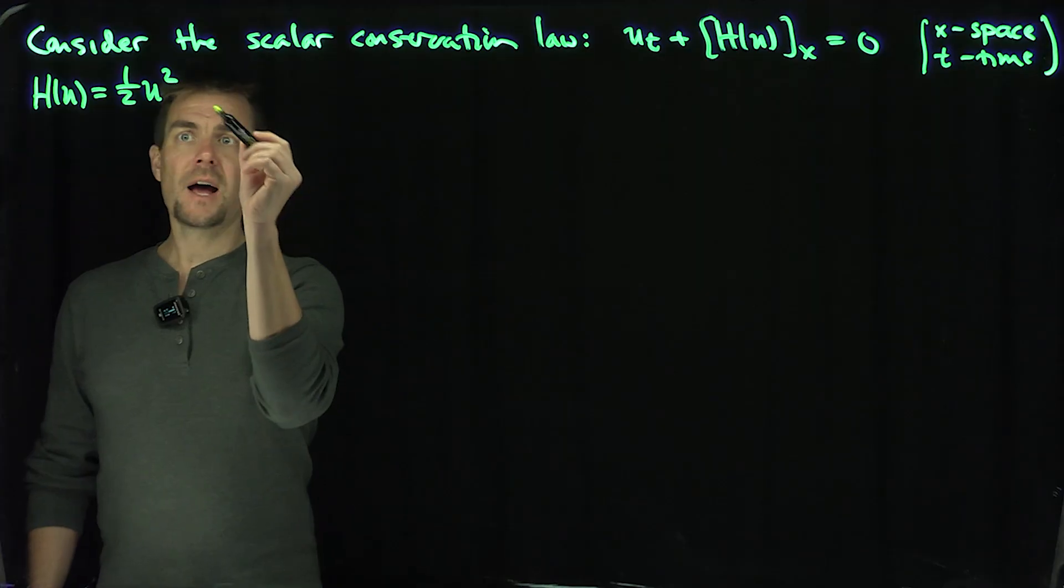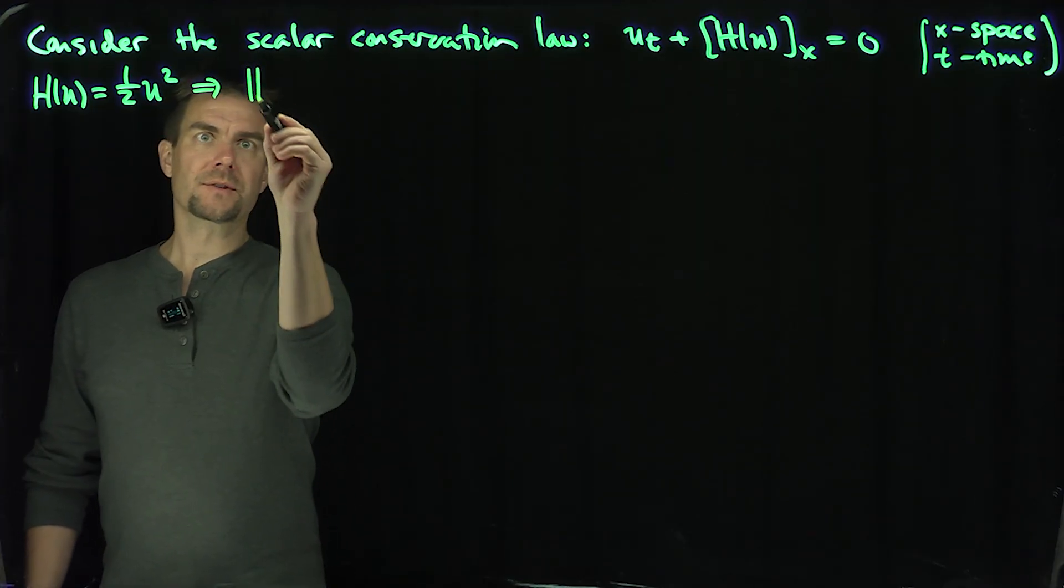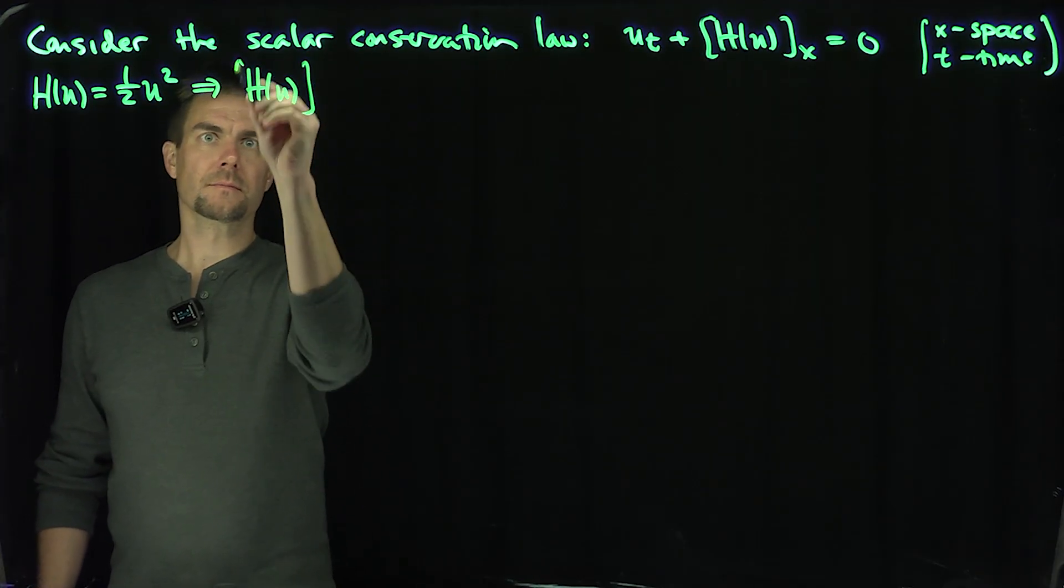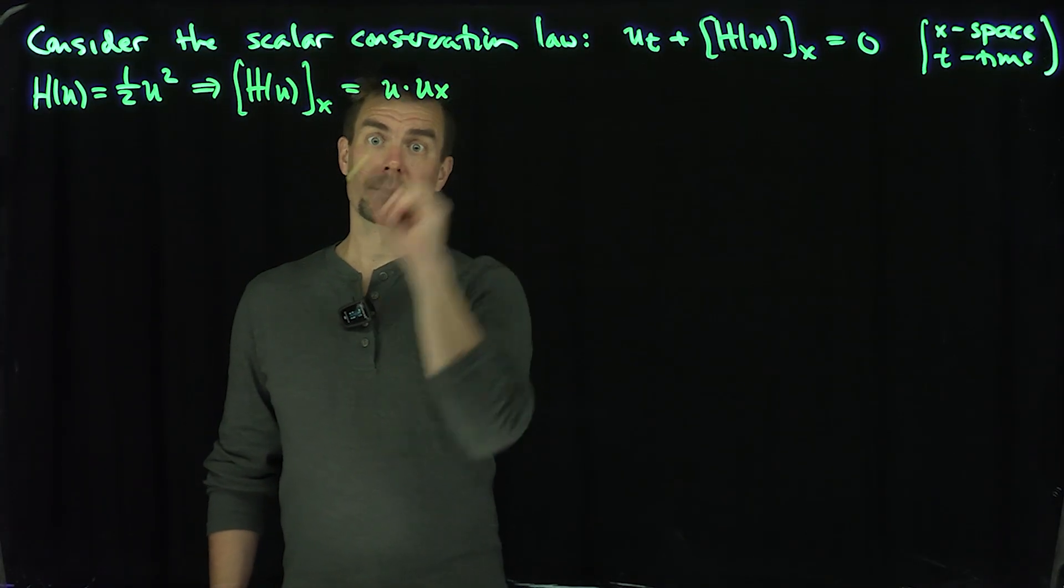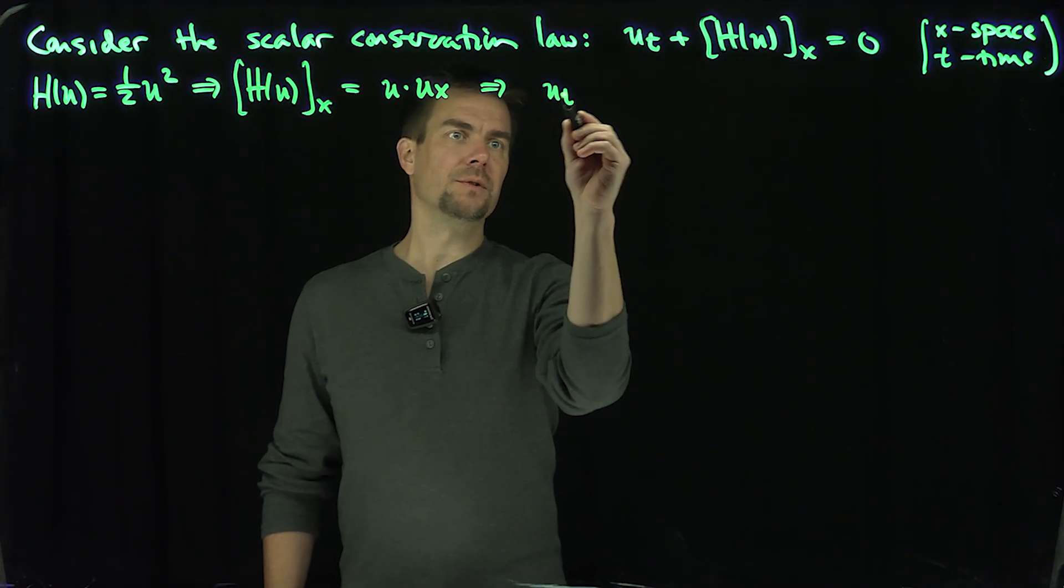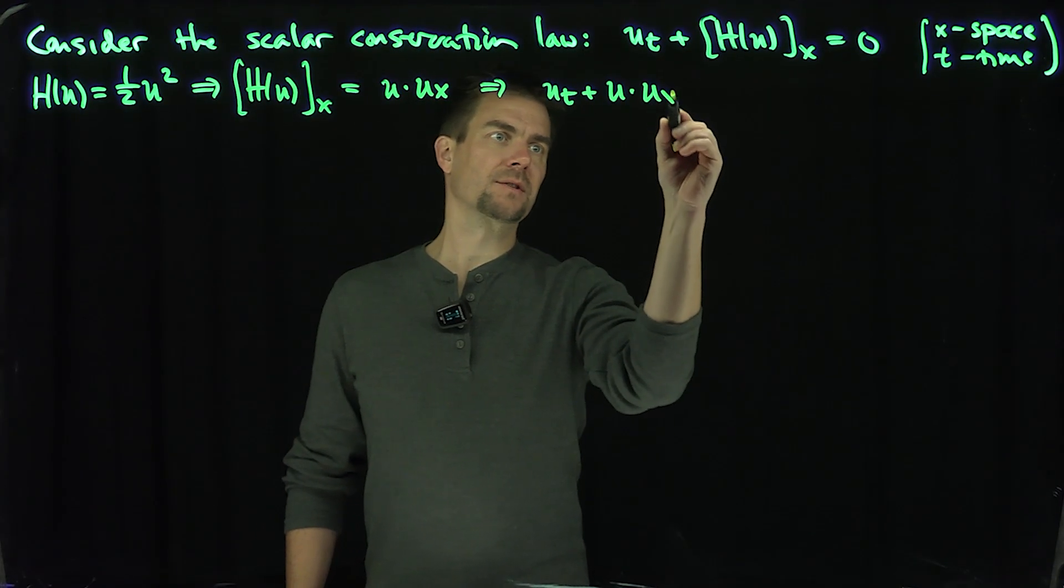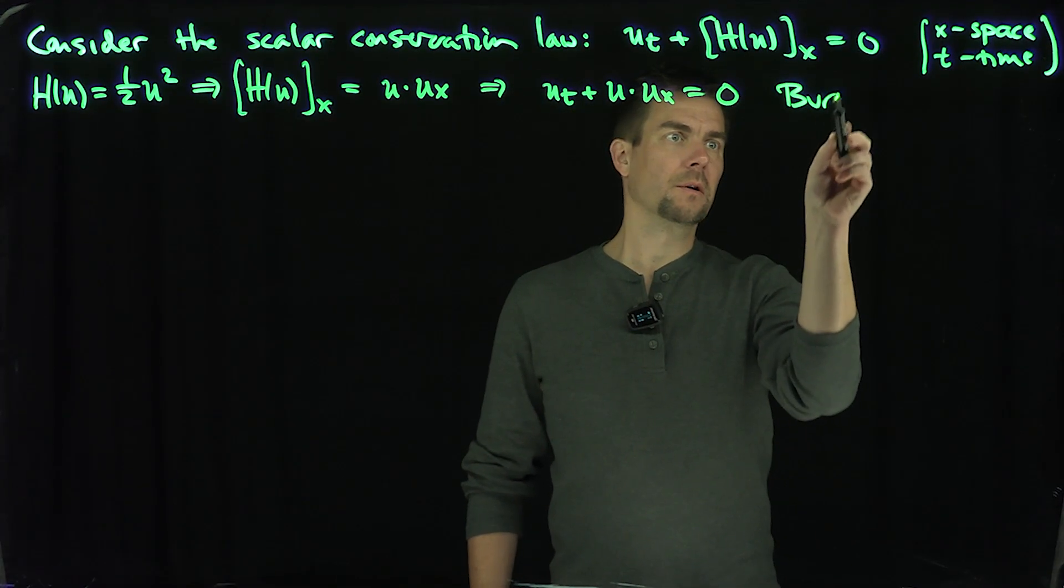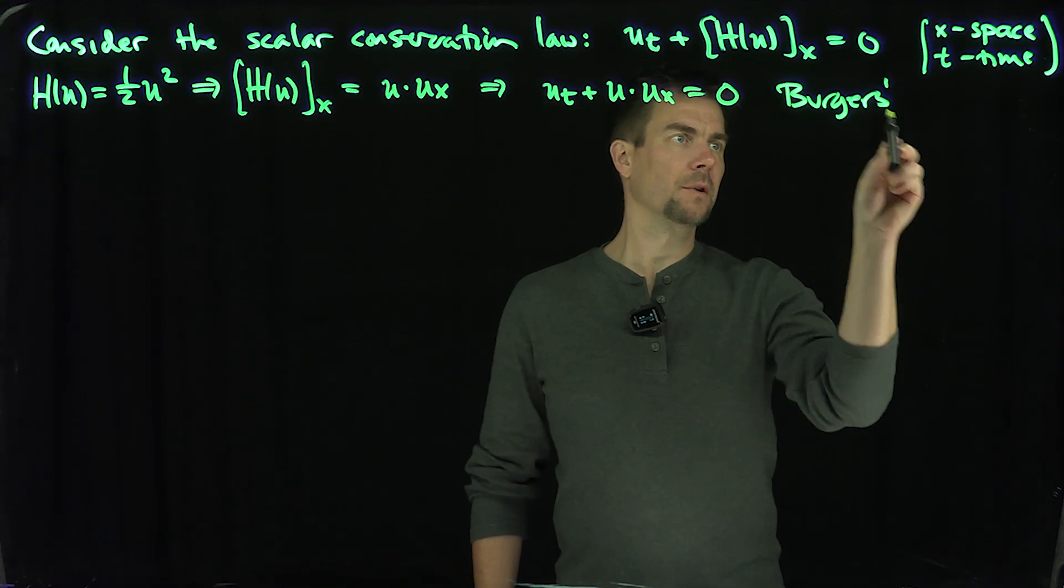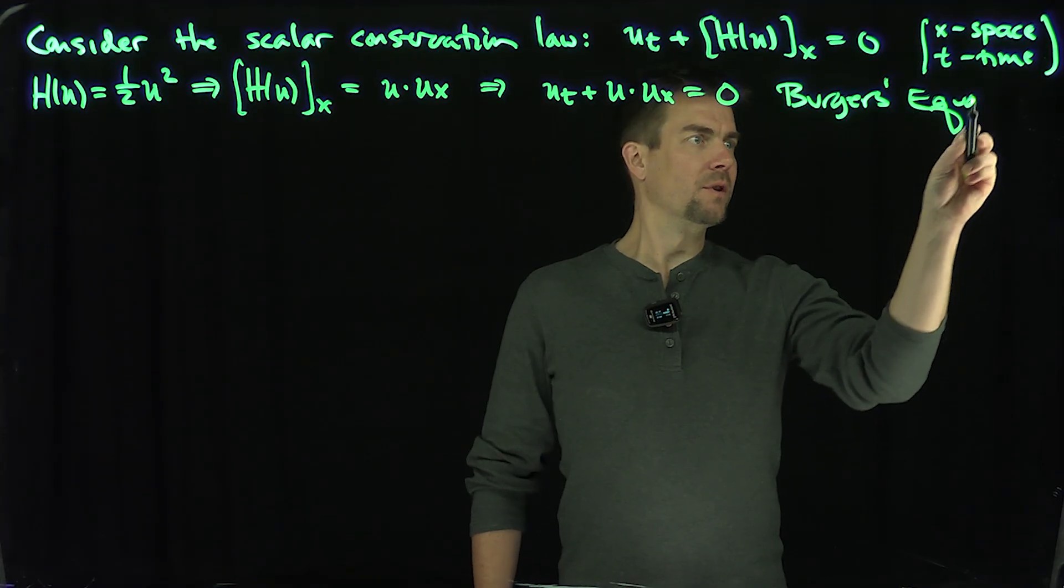And so now, what is h(u)_x? h(u)_x will just be u and then u_x. Beautiful. And that means our scalar conservation law is u_t plus u times u_x equals zero. And we know this equation is just Burgers' equation, which we've studied previously.